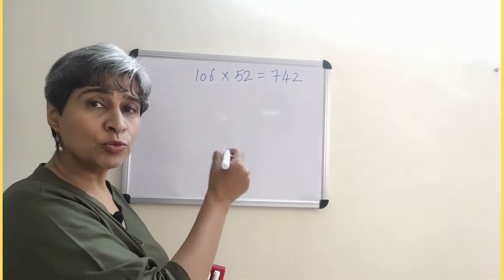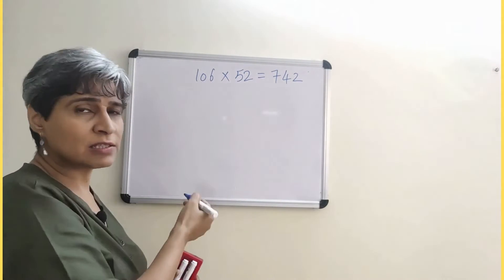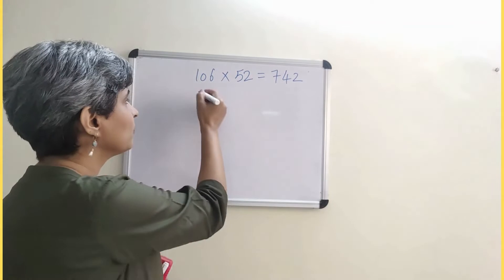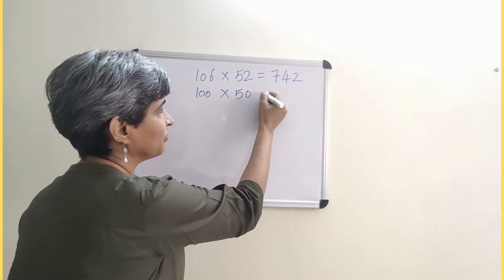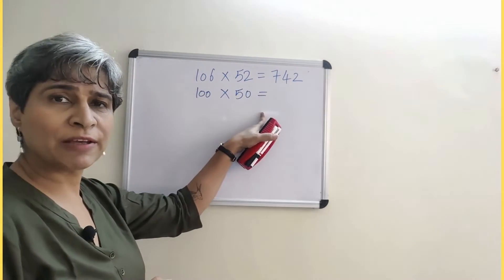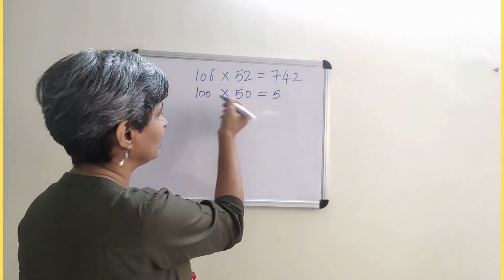So both these numbers I am going to round off. 106 is closer to 100, I will take 100. 52 being closer to 50. Now when I multiply 100 by 50, again I'm going to do 1 into 5 is 5, and there are three zeros here.